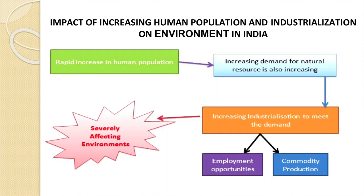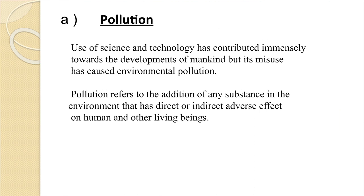What is the impact of increasing human population and industrialization on environment in India? Rapid increase in human population is the starting point — we have become far too many. This creates higher demand for natural resources. To meet requirements, industries are increasing. Yes, industries give more employment opportunities and produce more commodities for consumption, but we pay a very large price: all these activities are severely affecting our environment. One major effect is pollution. The use of science and technology has contributed immensely towards the development of mankind, but its misuse has caused environmental pollution.